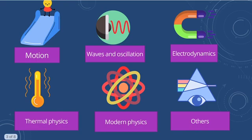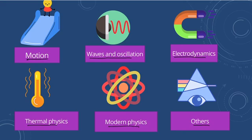What is the syllabus for the HSTR exam? Our syllabus includes or can be divided into six major parts. The first part is motion, the second part includes waves and oscillations, the third part is electrodynamics, the fourth part is thermal physics, the fifth is modern physics, and the last part is others which cannot be grouped into specific categories.